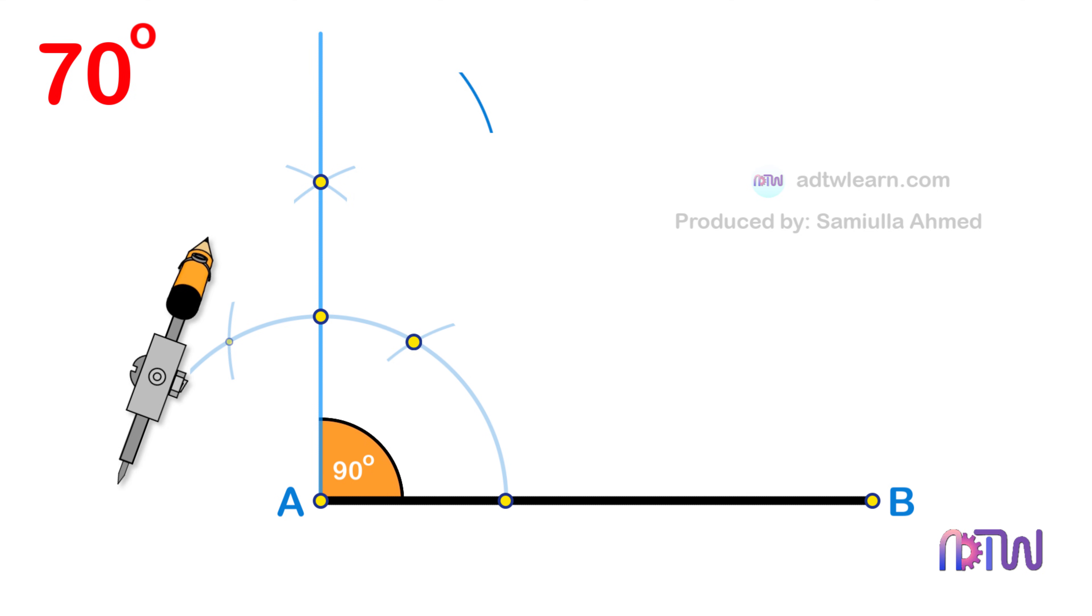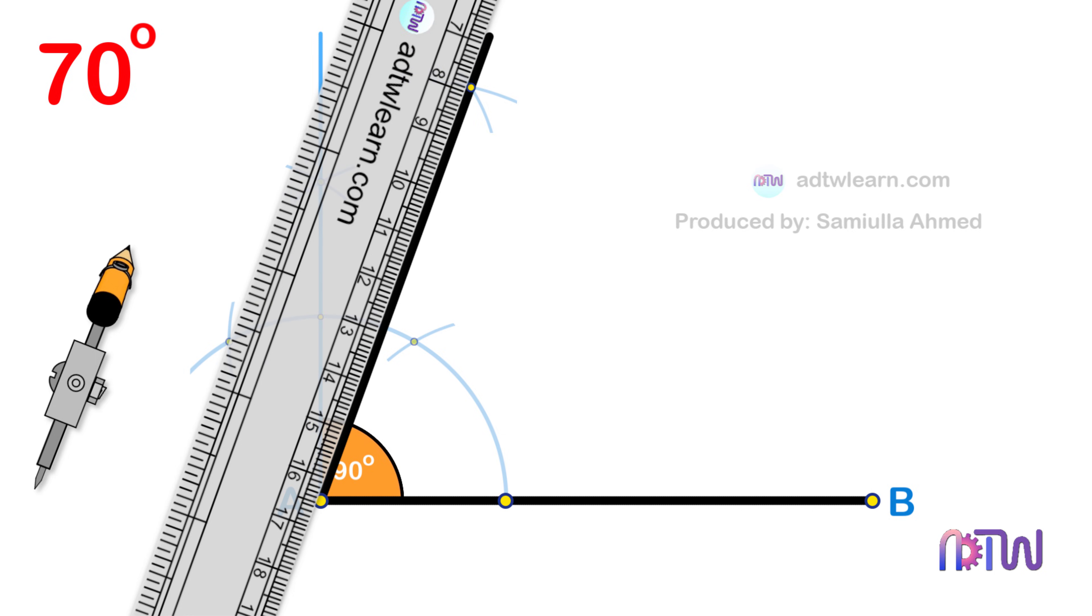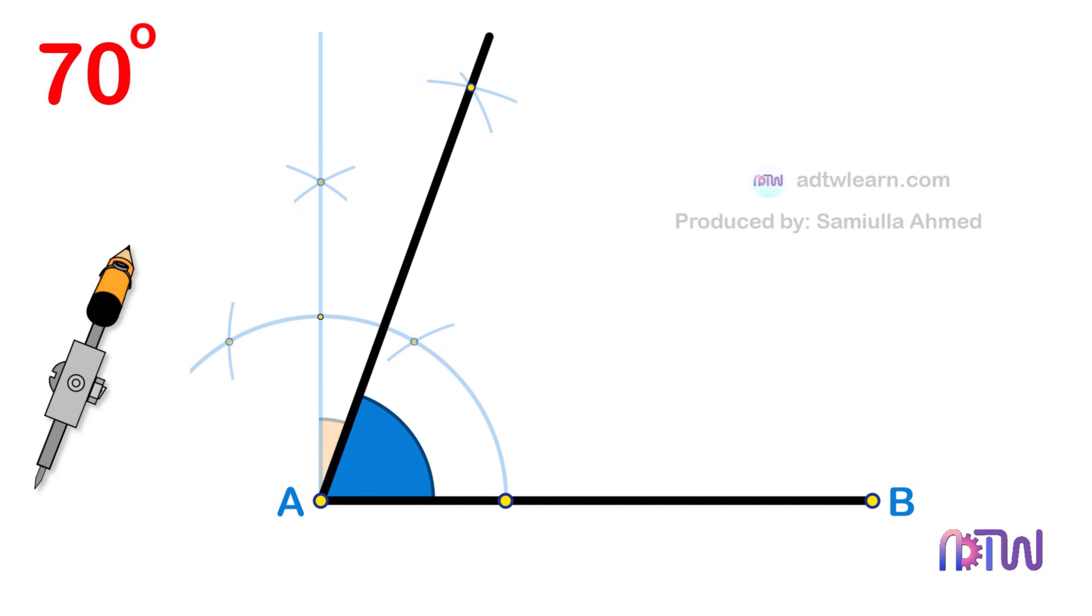And using this point as a center, cut an arc on the previous arc. In the end, draw a line passing through this point from endpoint A of the line segment. This line is inclined at the required 70 degree angle.